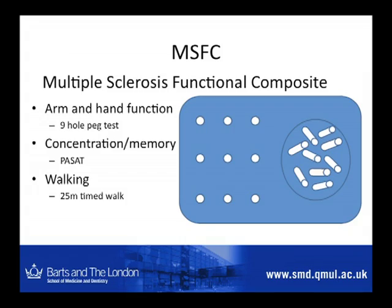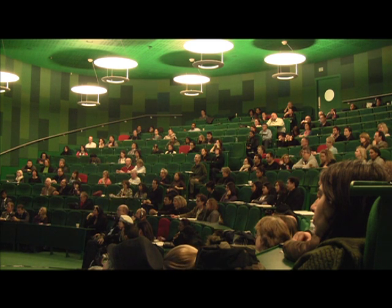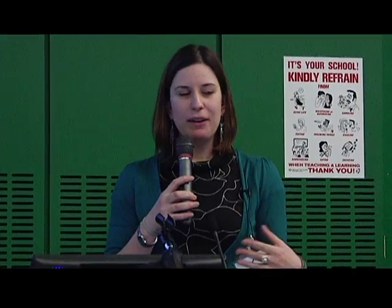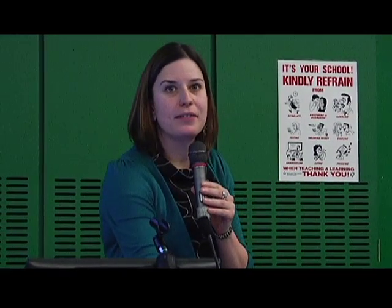Another outcome used for monitoring is called the MSFC, which stands for Multiple Sclerosis Functional Composite. It's made of a number of things. First of all, arm and hand function, which is done by what's called the 9-hole peg test, where you see how quickly somebody can put all the pegs in the holes and then take them out again. This is done with each hand, and you can measure this over time to see any change - if the hand becomes weaker or less well-coordinated, the time will increase. To assess concentration and memory, we use a test called PASAT - the ability to remember numbers and add them up. And then also a 25-metre timed walk, which is fairly self-explanatory.